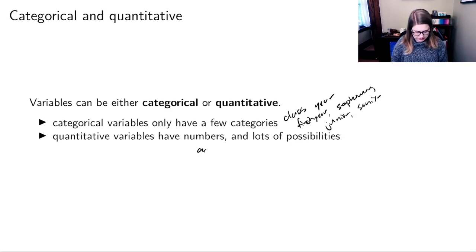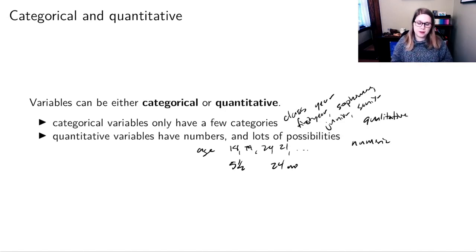And quantitative variables are variables that have numbers and lots of possibilities. So you could think of something like age, which could be 18, 19, 20, 21. You could also think of, a lot of times little kids are like, I'm five and a half. And that's really important to them. Or people are like, she's 24 months. So you could think about specifying ages in very minute detail with lots of possibilities. Sometimes quantitative variables are also called numeric variables. Sometimes categorical variables could be called qualitative variables. So there are some different words, but those are the two main types of variables.